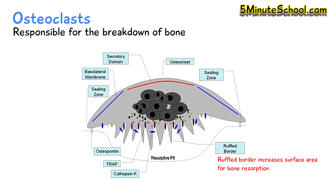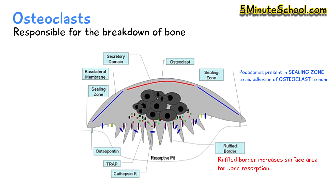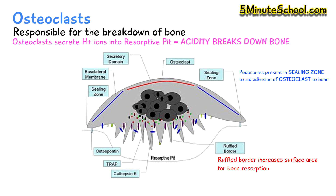The attachment of osteoclasts onto the bone they're resorbing is via a sealing zone, where special structures called podosomes help to stick the osteoclast onto the bone. The area between the ruffled border and the bone is called the resorptive pit, which is the active area the osteoclast is breaking down.